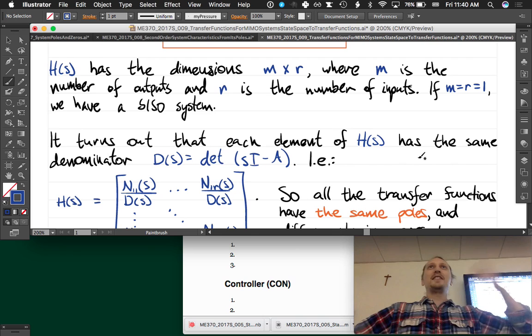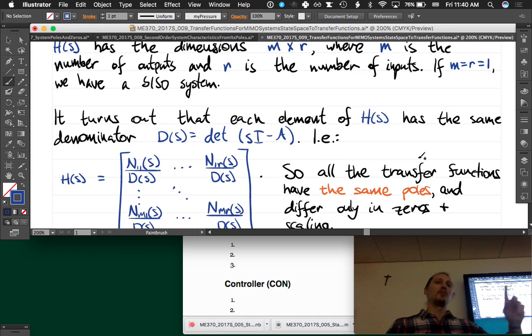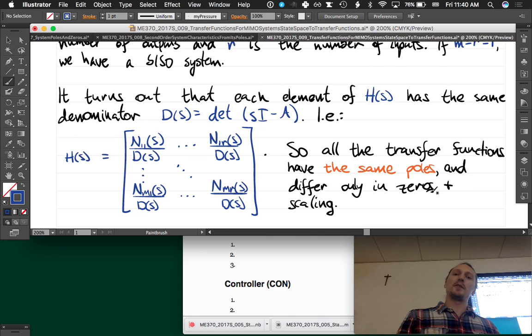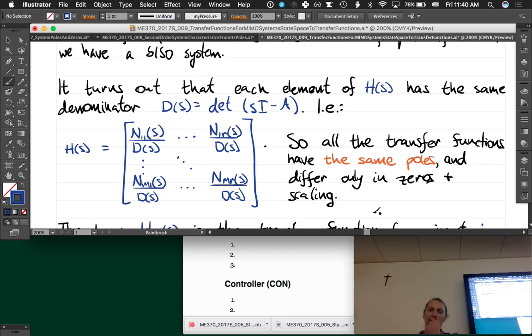Poles. It's the same. The poles of our SISO system, believe it or not, are the poles of all of these transfer functions. They always have the same poles, every single one of them. That's pretty cool, something to note. So all of the transfer functions have the same poles and differ only in zeros and scaling.